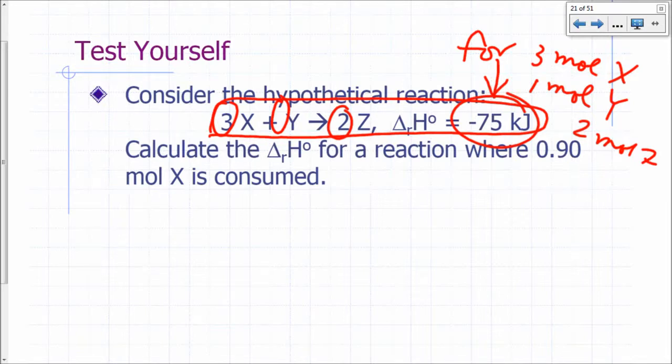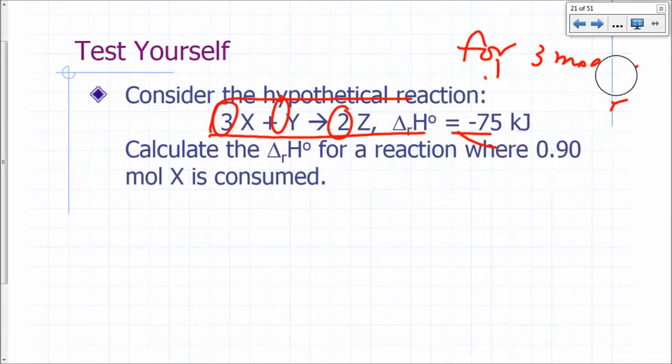So it's negative 75 if three moles of X and one mole of Y were consumed and two moles of Z were produced. But what if you have a reaction you carry out one in the lab, and it's only 0.9 moles of X consumed? What would you have to do?